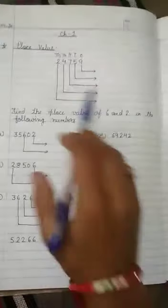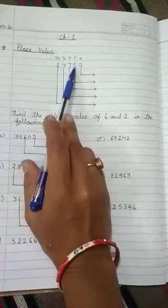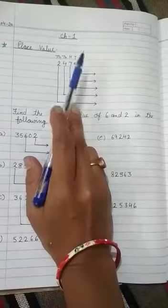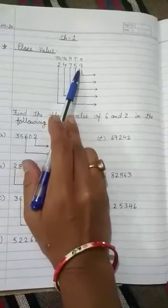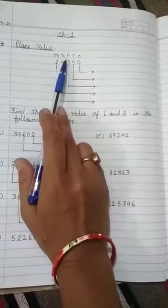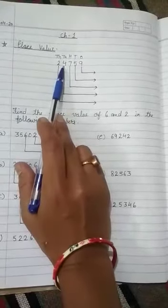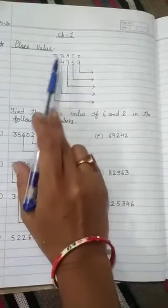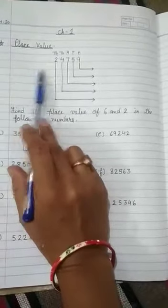For example, here the number is 24759. In this number, 9 is on 1's place, 5 is on 10's place, 7 is on 100's place, 4 is on 1000's place, and 2 is on 10,000's place.